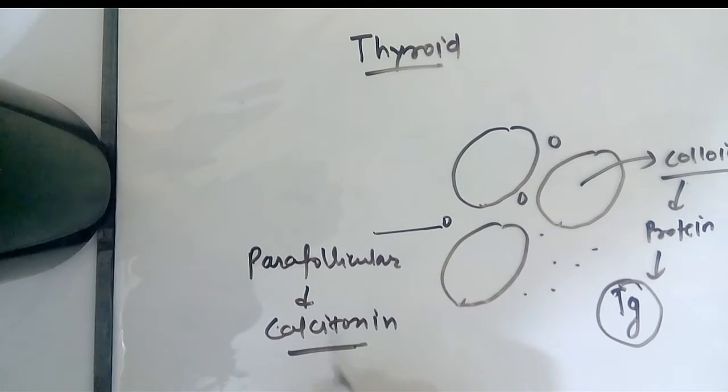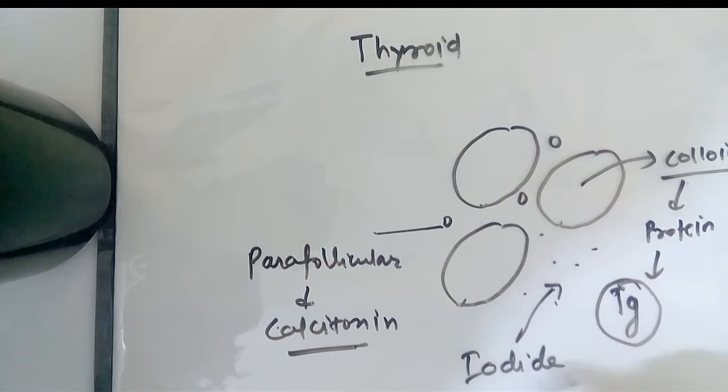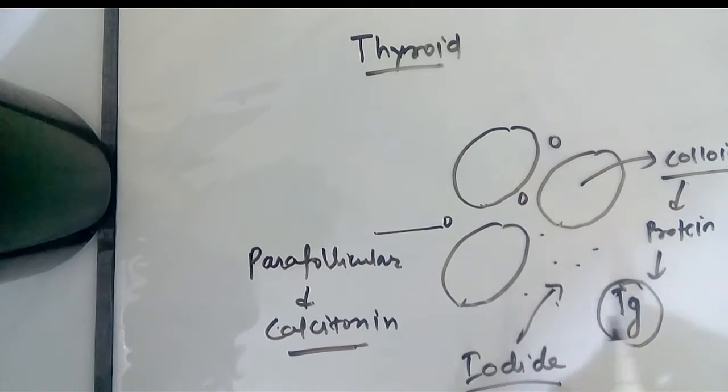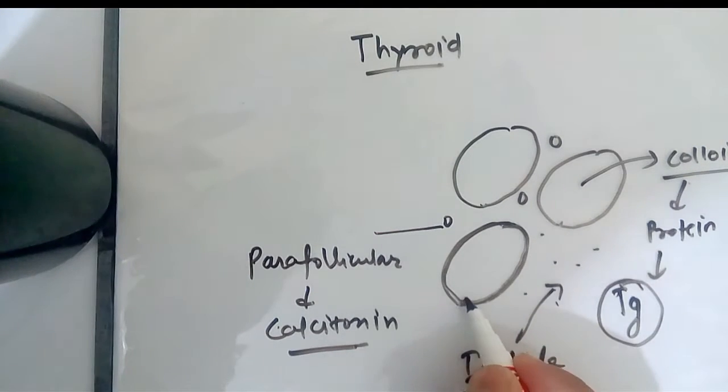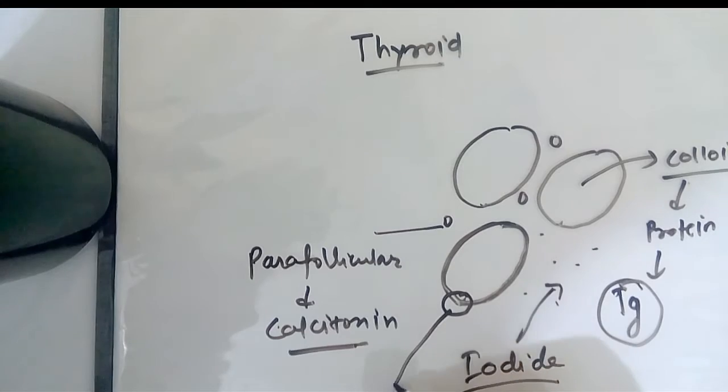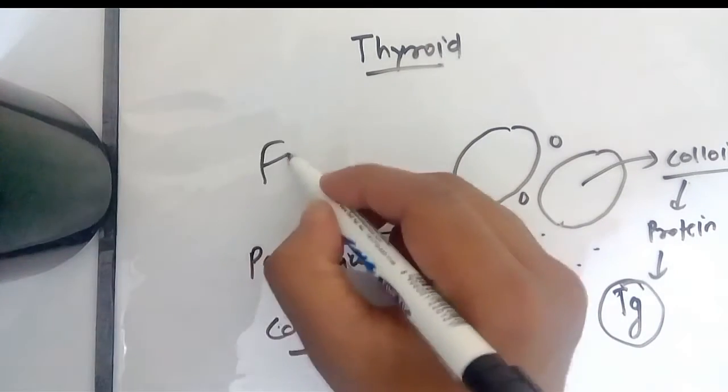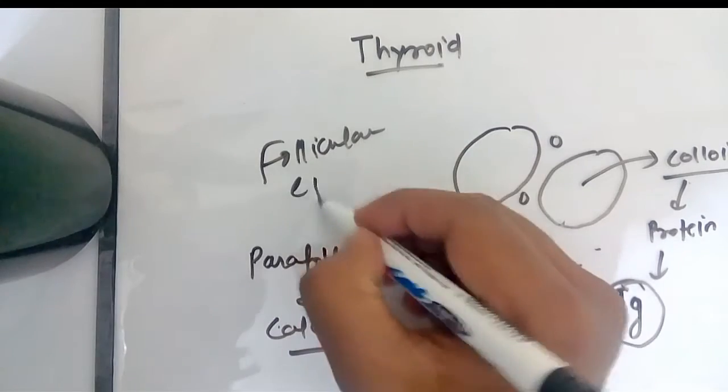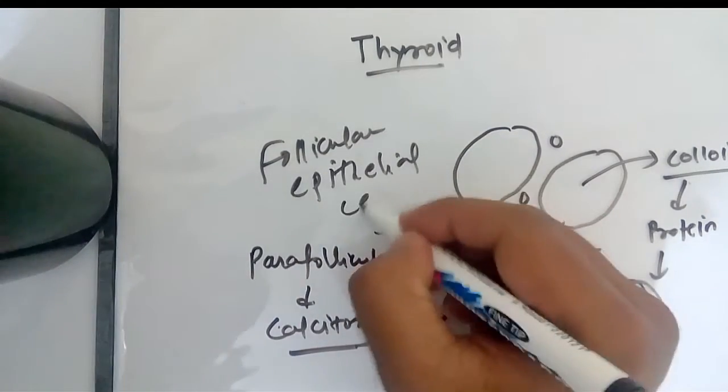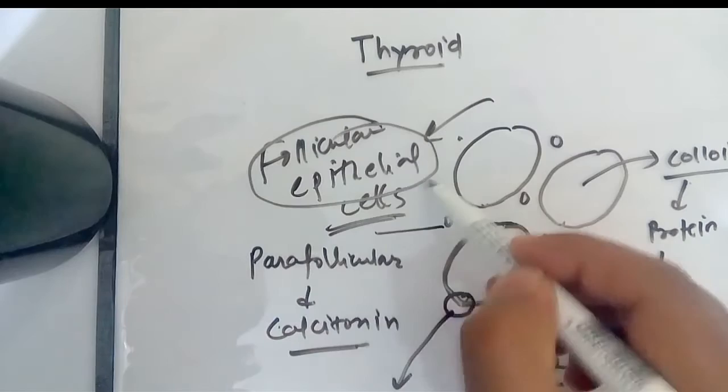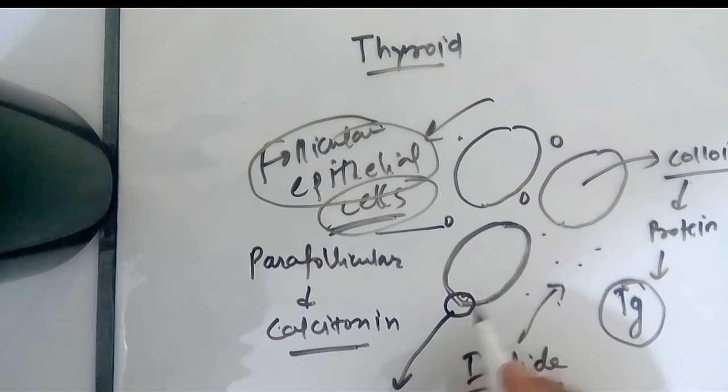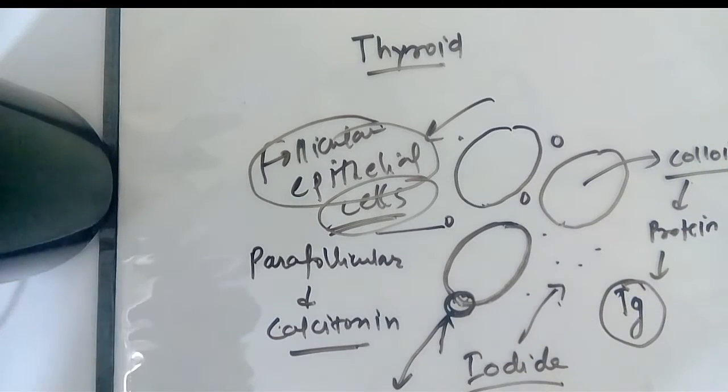The RBCs bring iodide that we take from food to the thyroid gland. The main process of secretion of the thyroid hormone takes place in the epithelium of the follicle, that is the follicular epithelial cells. I will just magnify one cell and show you how this happens at the molecular level.